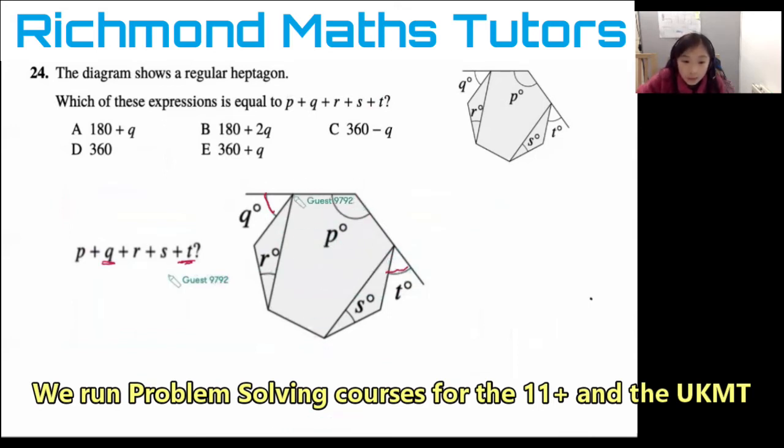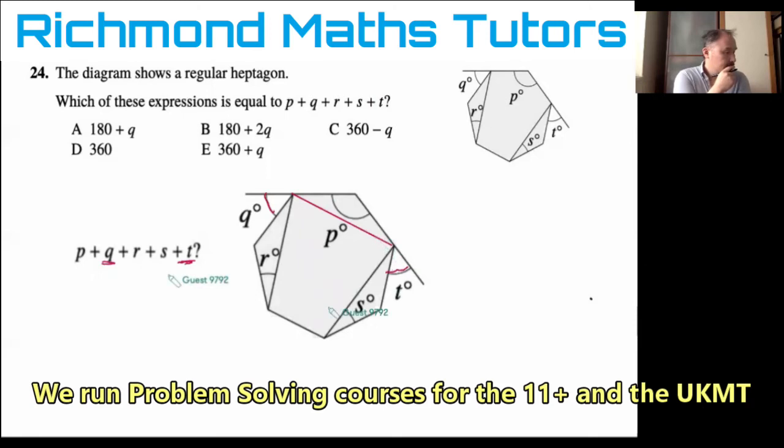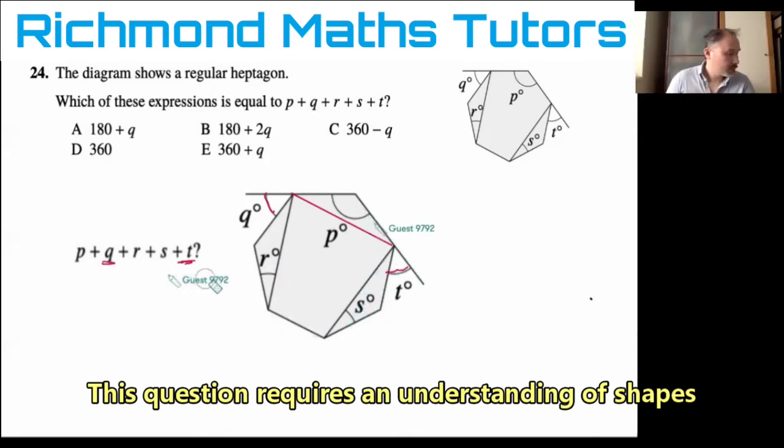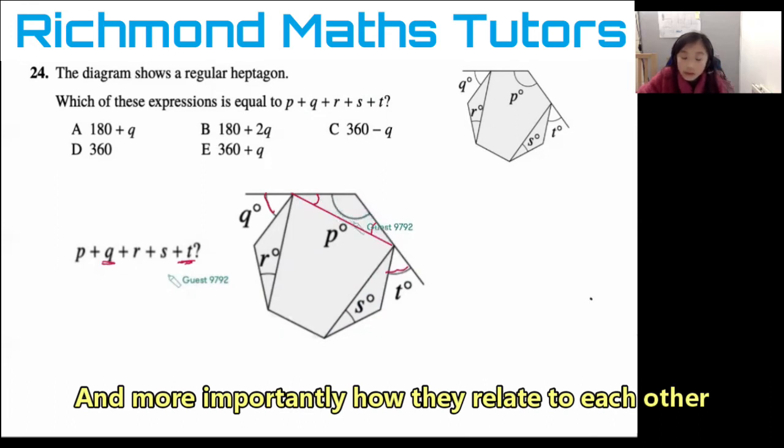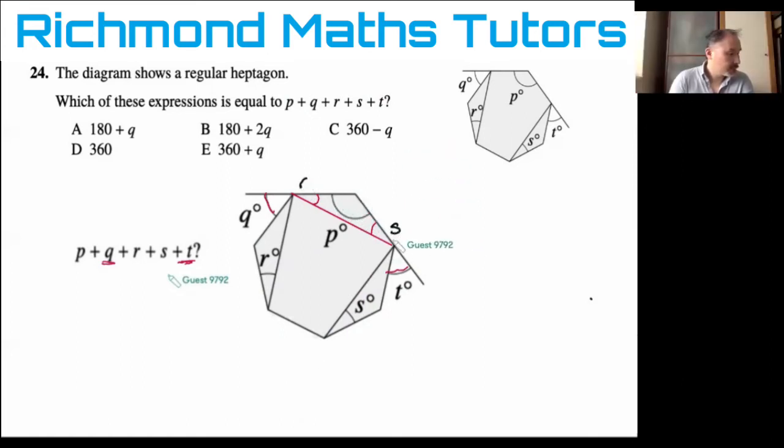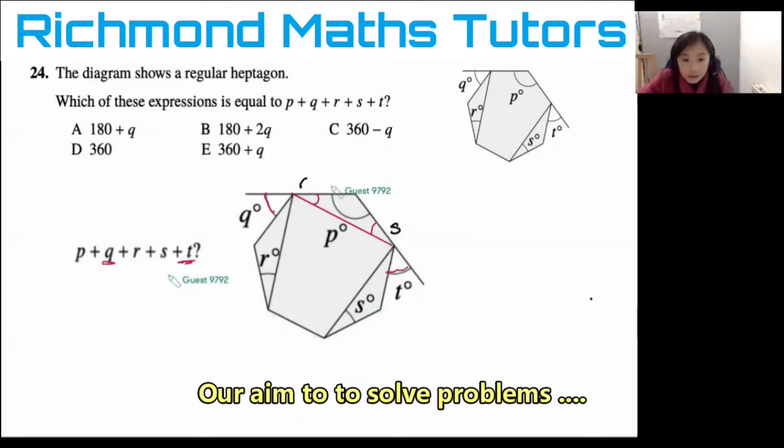To work out the other angles, not quite work out, but to find them out, these triangles are the same because there's a regular heptagon. Which means we're able to move S and R to over here. And the angles that add up inside the triangle gives you 180. Which means these angles added up give you 180.